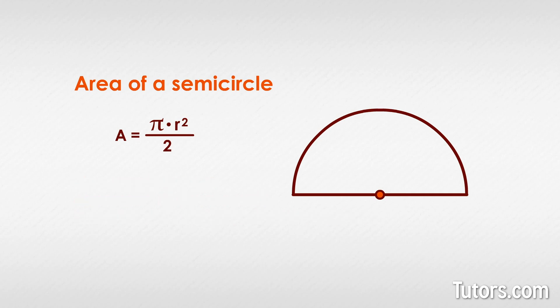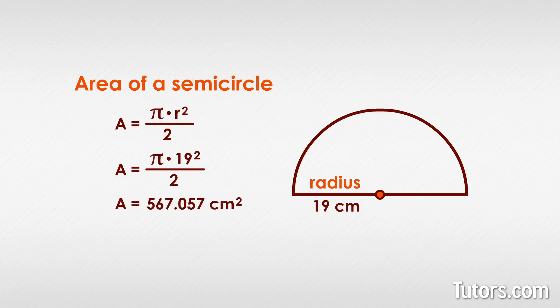For example, this semicircle has a radius of 19 centimeters. To find its area, we replace r with the actual value, so A equals πr squared divided by 2 becomes A equals π times 19 centimeters squared divided by 2. Solve for A and you get A equals 567.057 centimeters squared.